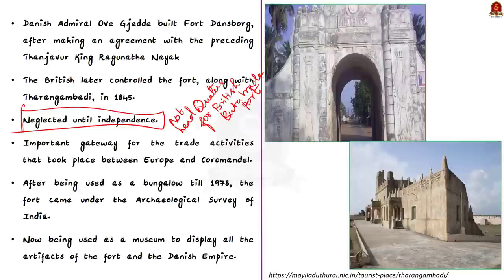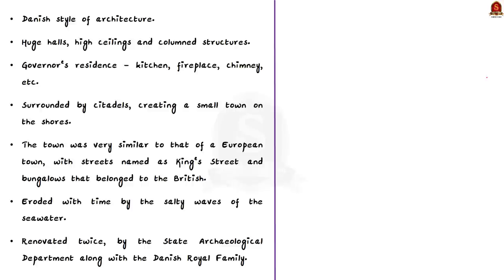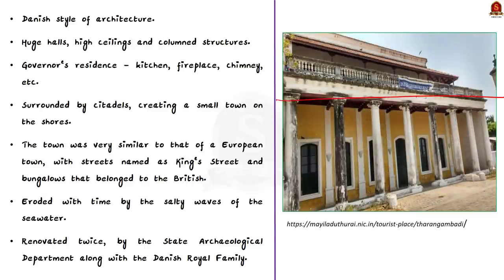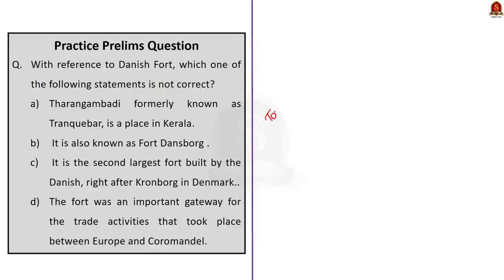The architecture of Fort Danzberg is constructed in Danish style, featuring huge halls, high ceilings and columned structures. The fort faces the sea and has rooms that used to be the governor's residence, including a kitchen, fireplace, chimney, etc. The fort used to be surrounded by citadels creating a small town on the shore, very similar to a European town with streets named as King's Street and bungalows that belonged to the British. These citadels were eroded over time by salty seawater. The fort was renovated twice by the state archaeological department along with the Danish royal family, once in 2001 and again in 2011, to increase its tourist appeal.